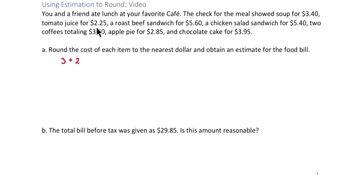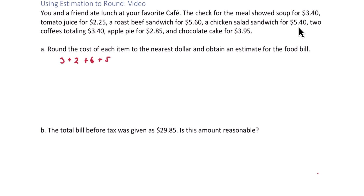5.60 — look to the right of the decimal, we get a six which is bigger than five, which means we round up to six dollars. 5.40 rounds down to five dollars. 3.40 rounds down to three dollars. 2.85 rounds up to three dollars. 3.95 rounds up to four dollars.